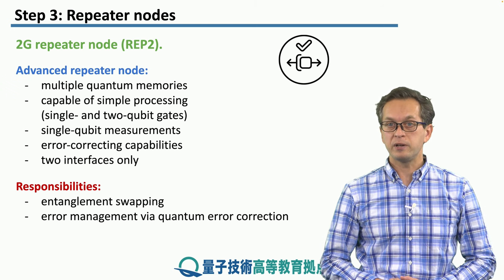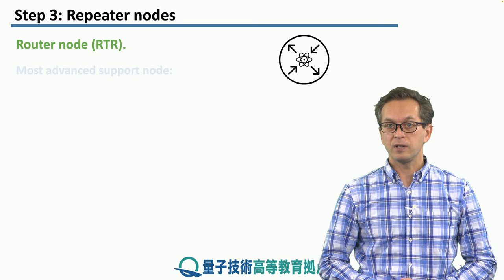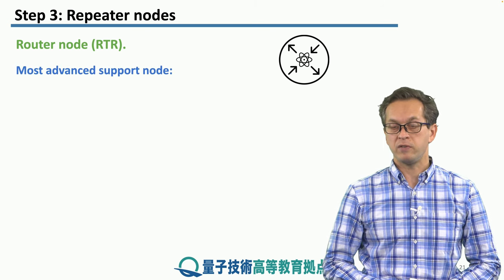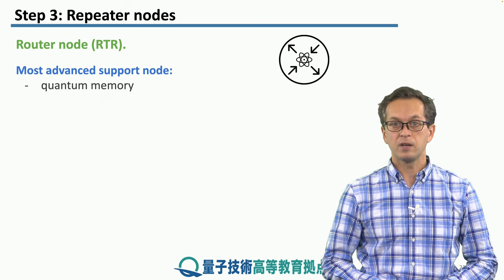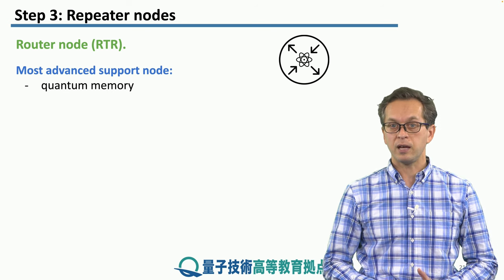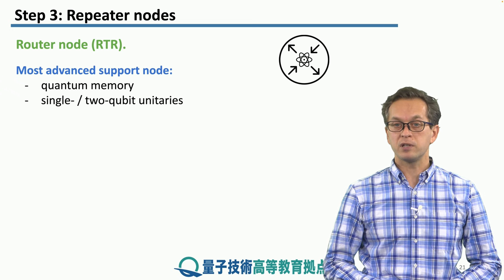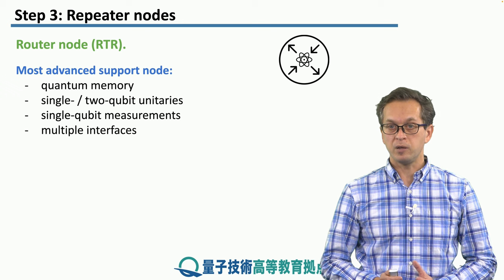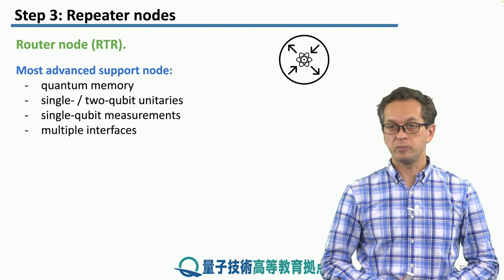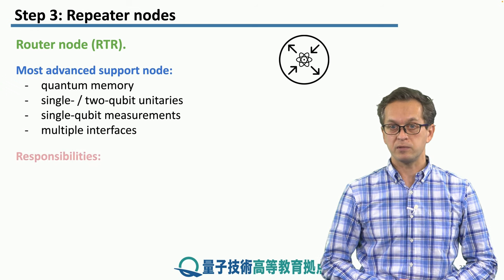The last type of repeater node is the router. The quantum router is the most advanced of these three nodes. Again, it is equipped with quantum memories and can perform single and two qubit unitaries as well as single qubit measurements. The big difference is that it has multiple interfaces — not just two — and this is where the routing happens.